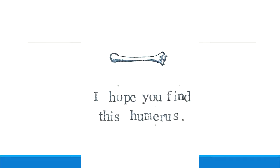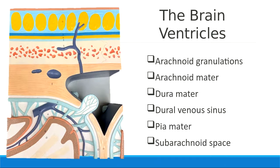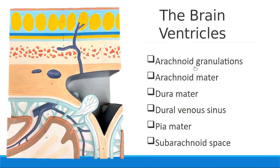We're not going to spend a lot of time talking about the ventricles, the fluid-filled spaces in the brain. This is a model that specifically shows us the meninges of the brain, which are the connective tissue layers around the brain. We labeled everything on this model last week except for one new structure: the arachnoid granulations. These are the little bubbles right here on the model.